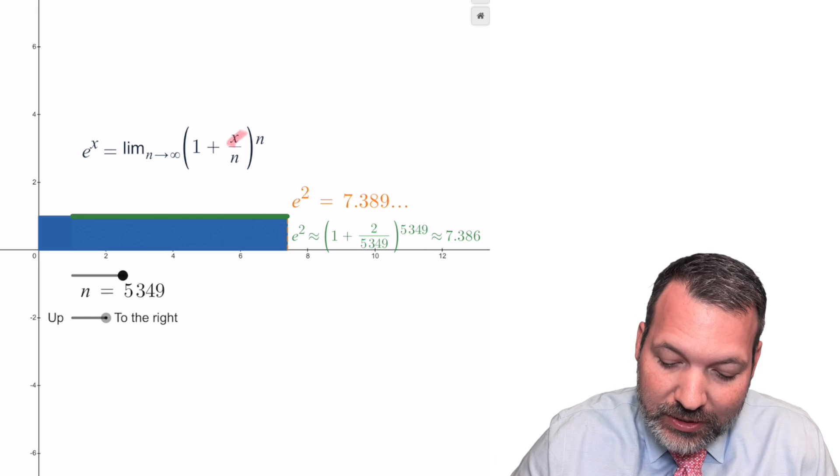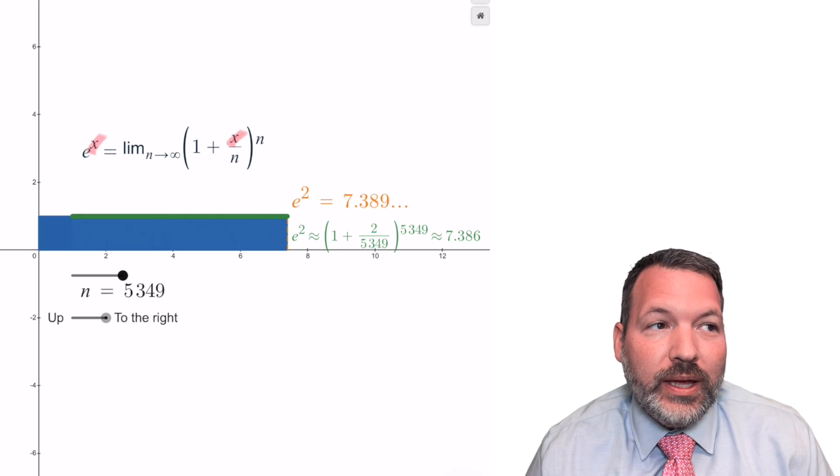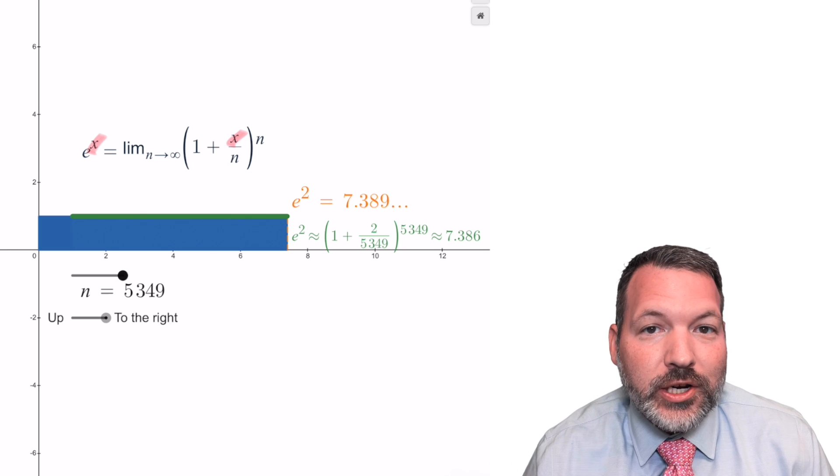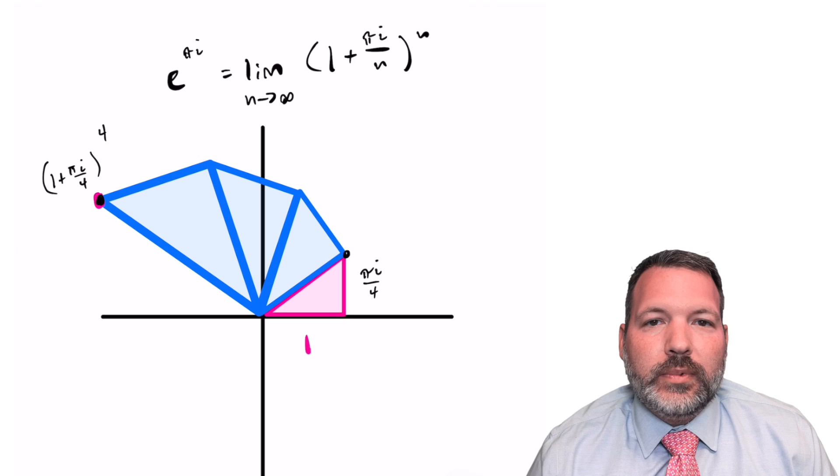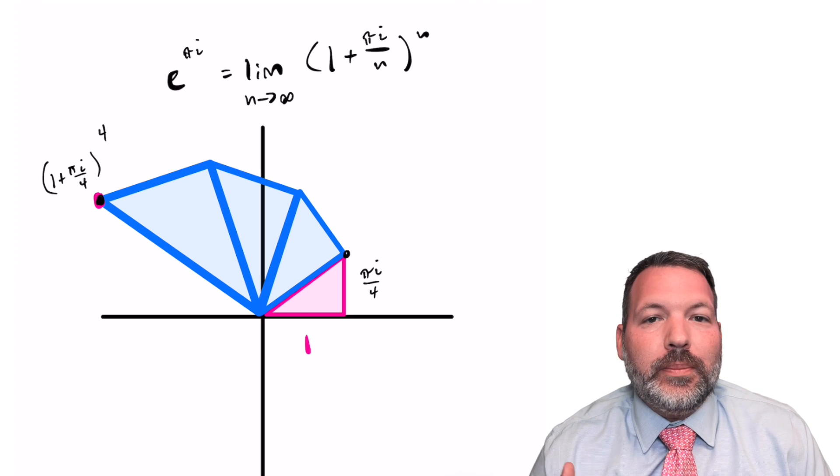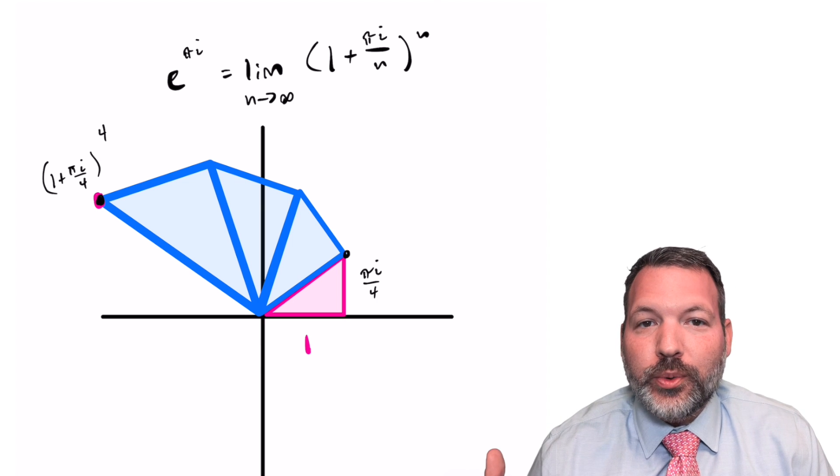The key for understanding e to the i pi equals negative 1 is that x does not have to be a real number. It can just as easily be an imaginary number like pi i.